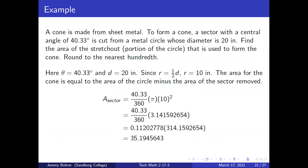A cone is made from sheet metal. To form a cone, a sector with a central angle of 40.33 degrees is cut from a metal circle whose diameter is 20 inches. Find the area of the stretch out — the portion of the circle used to form the cone. Round to the nearest hundredth. Here theta equals 40.33 degrees and d equals 20 inches. Since r is one half d, r equals 10 inches. The area of the sector removed is 40.33 divided by 360 times pi times 10 squared, which equals 35.1945643.